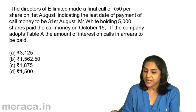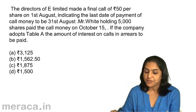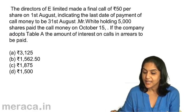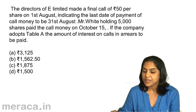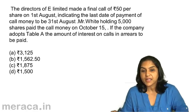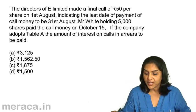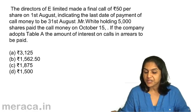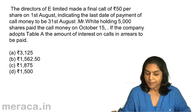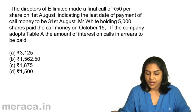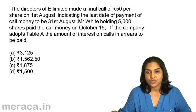The directors of E Limited made a final call of Rs. 50 per share on 1st August, with the last date of payment being 31st August. Mr. White, holding 5,000 shares, paid the call money on October 15. If the company adopts Table A, the amount of interest on calls in arrears to be paid would be: A) Rs. 3,125, B) Rs. 1,562.50, C) Rs. 1,875, D) Rs. 1,500.